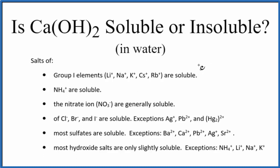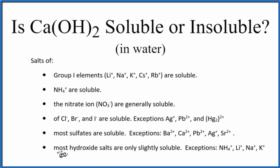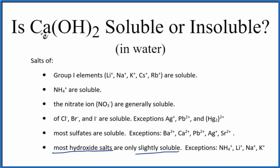There are a few ways that we can know that. We could look at the solubility rules and use those to figure out the solubility of calcium hydroxide. Going down our rules, most hydroxides — that OH, the hydroxide, when it's bonded to a metal — are only slightly soluble. There are some exceptions, but calcium is not one of them. So calcium hydroxide should be slightly soluble in water.